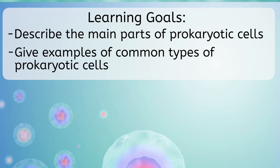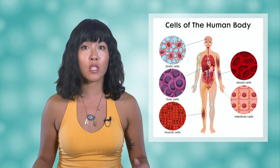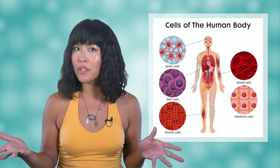Now that you've had a tour of prokaryotic cells, let's review. We described the main parts of a prokaryotic cell and gave examples of common types of prokaryotic cells. Here's a parting question: what kind of cells make up humans? Do you think they are similar to the cells we saw today, or very different? We'll find out next time. Until then, remember that biology isn't just science — it's the way of life. See you next time.